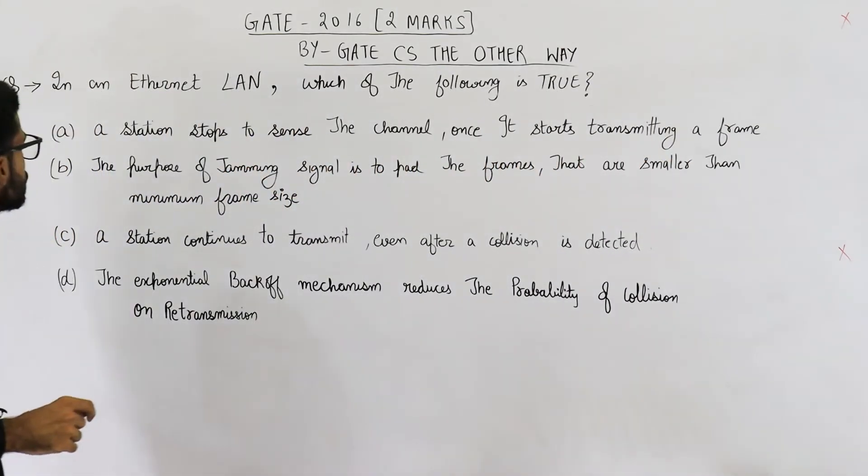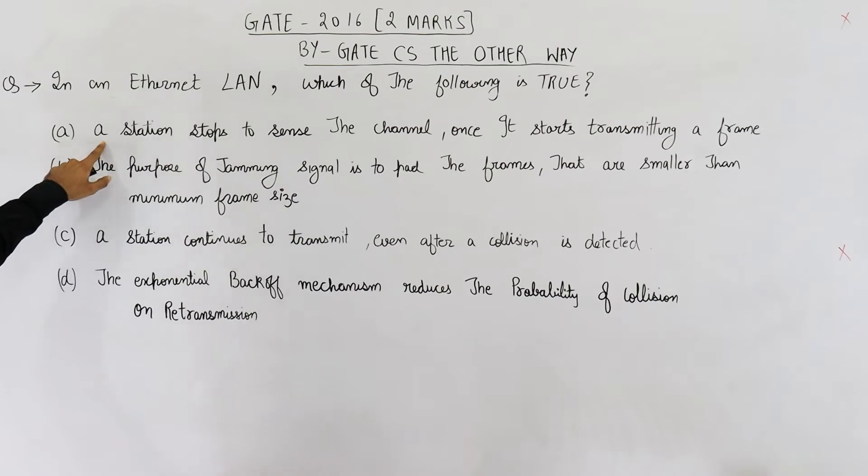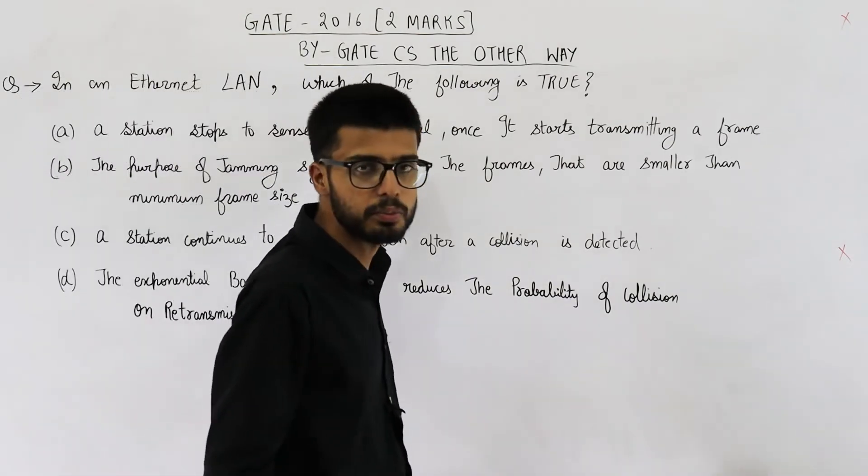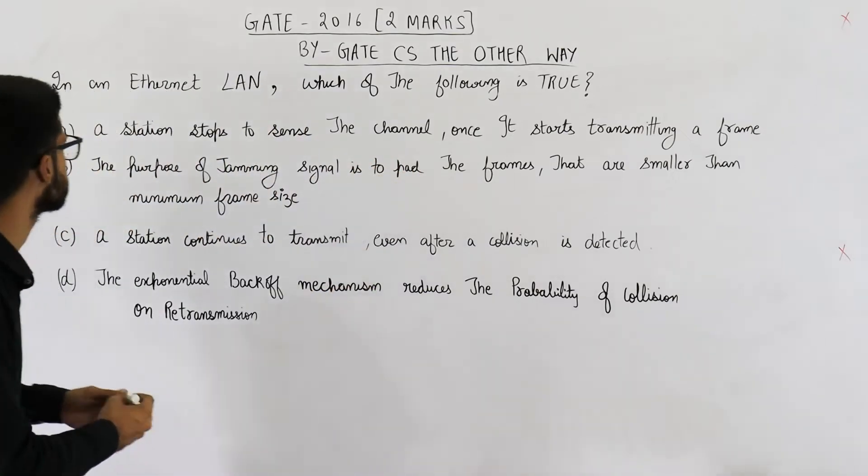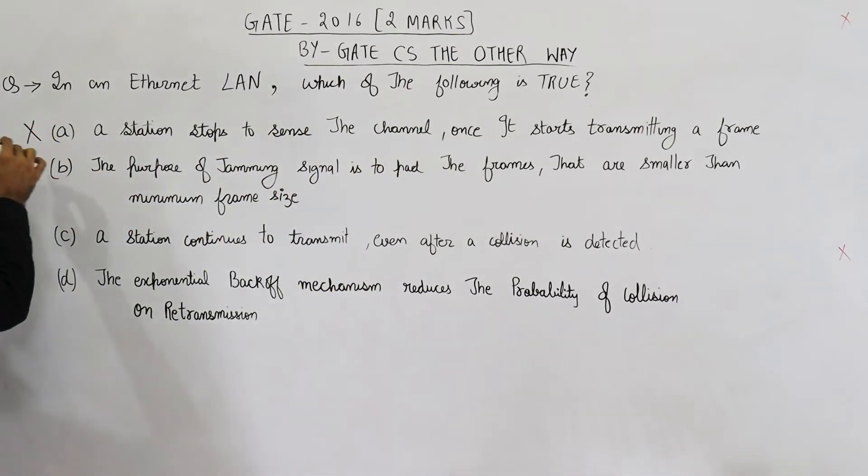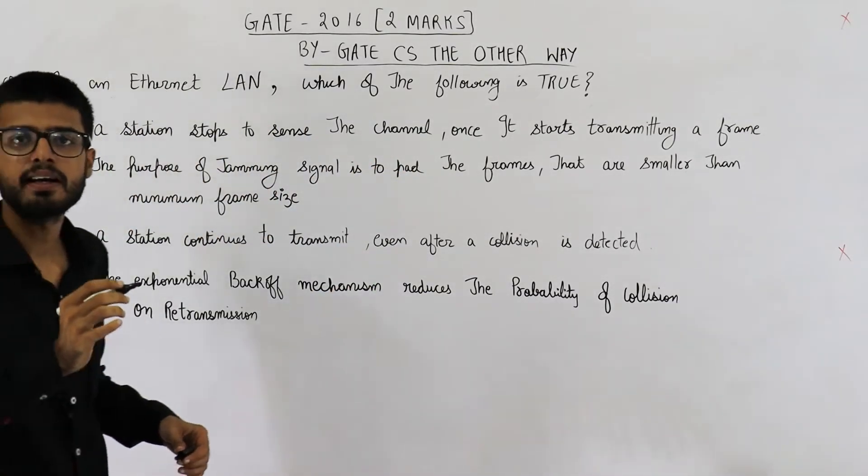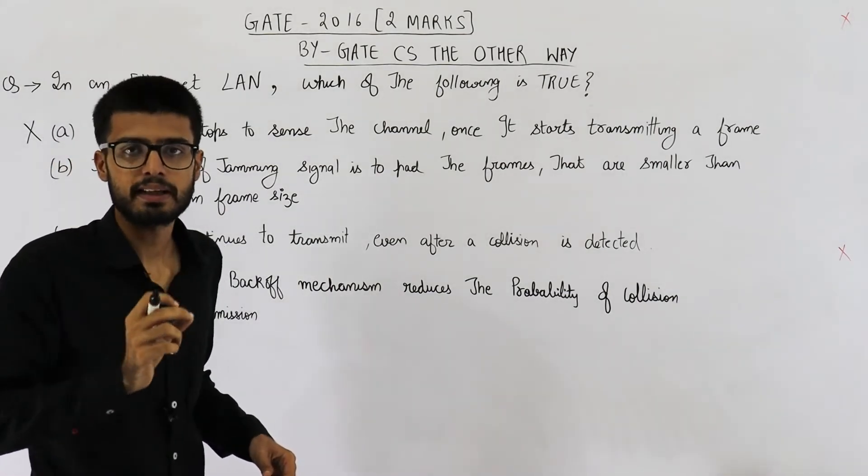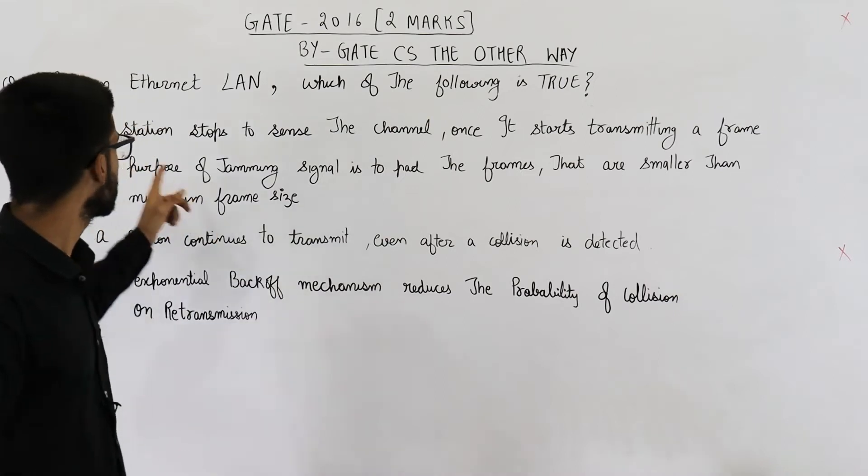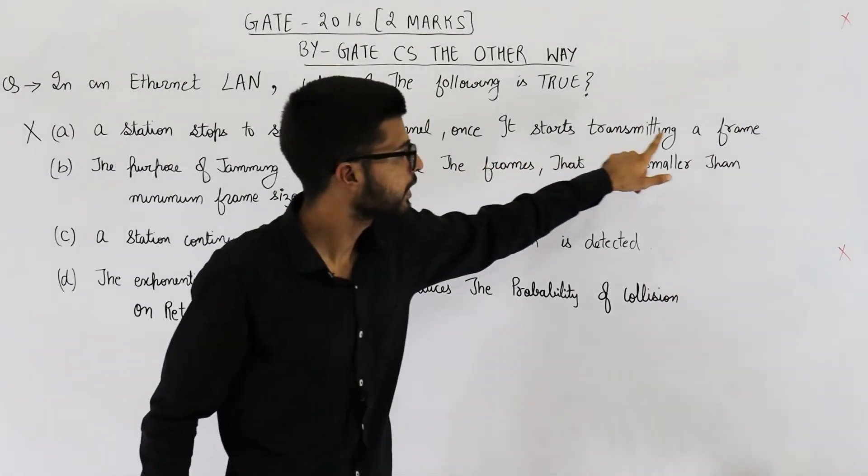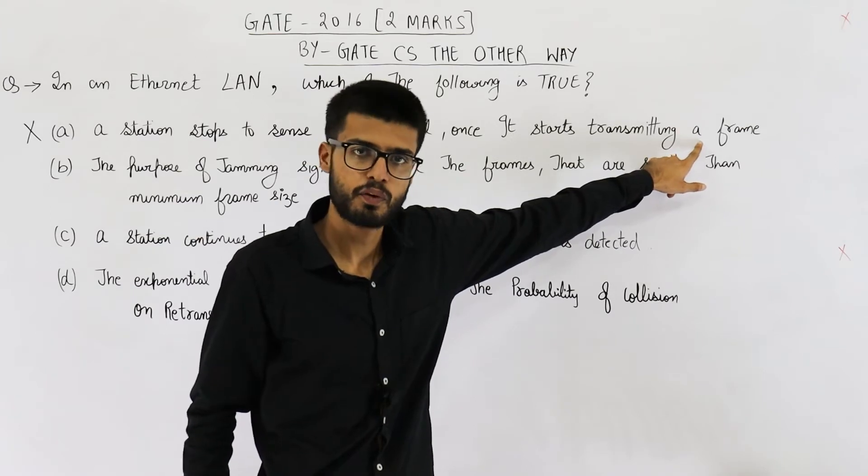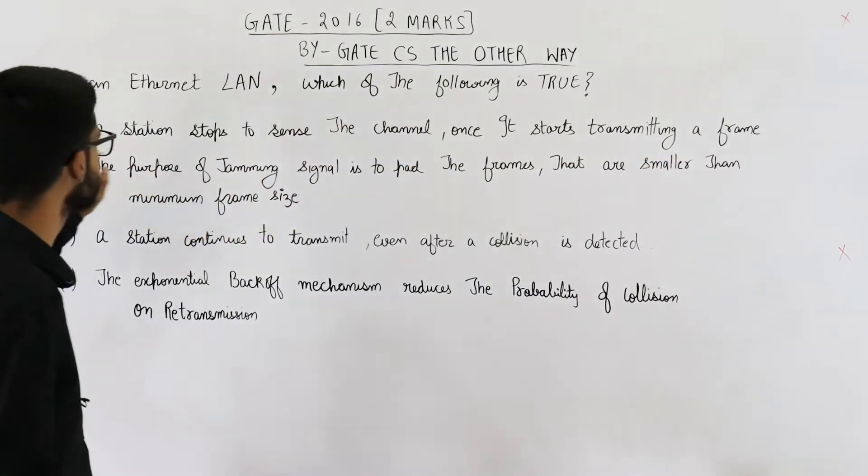So let's see which of these is true. Option A says a station stops to sense the channel once it starts transmitting a frame. This one is false. Because the station that is sending a frame, it is the duty of that very station to detect the collisions. So if a station is transmitting a frame, it will keep on sensing the channel continuously for any collisions. So option A is false.